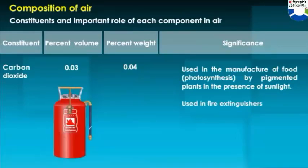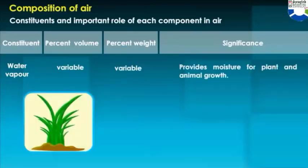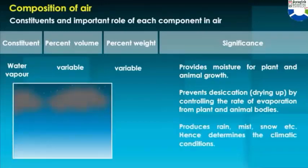Carbon dioxide is also used in fire extinguishers. Water vapor: percent volume variable, percent weight variable. Significance: it provides moisture for plant and animal growth, prevents desiccation by controlling the rate of evaporation from plant and animal bodies, and produces rain, mist, snow, etc., hence determining climatic conditions.